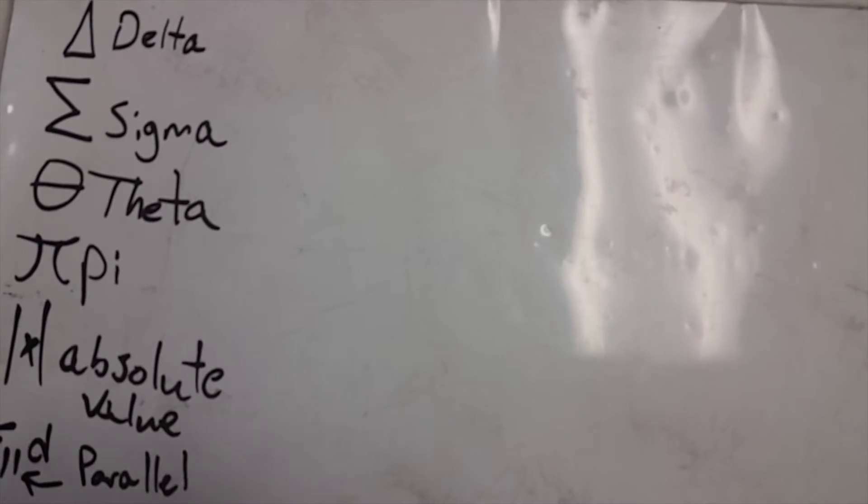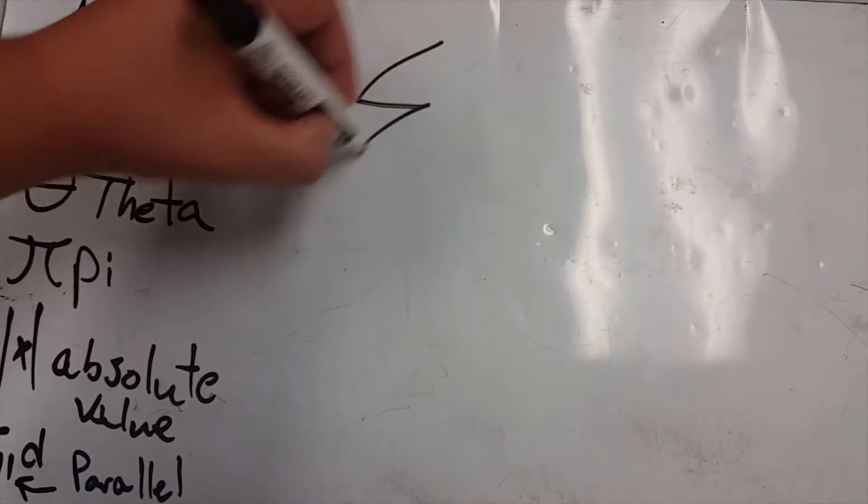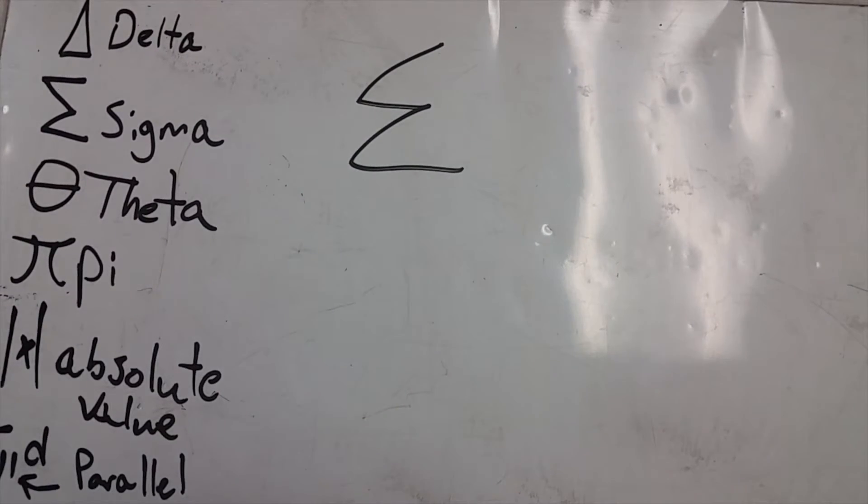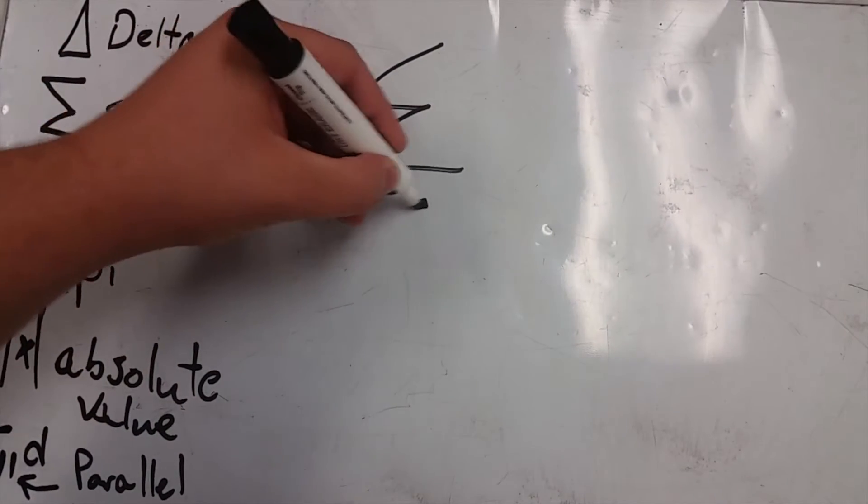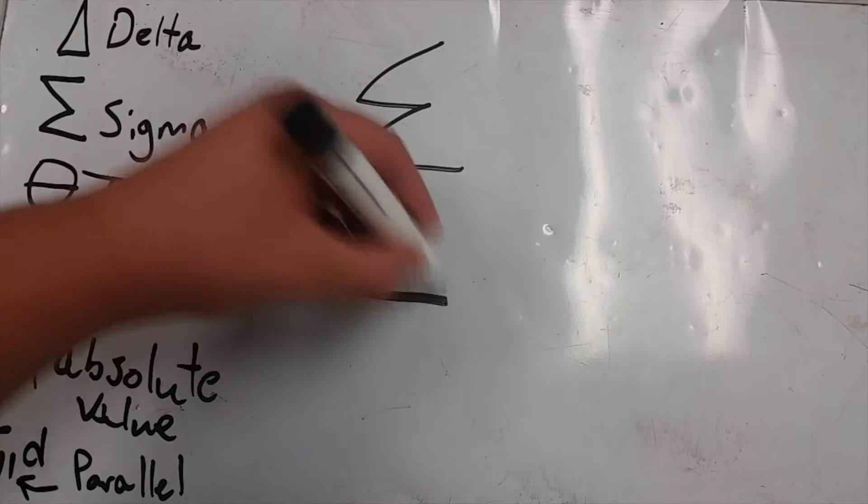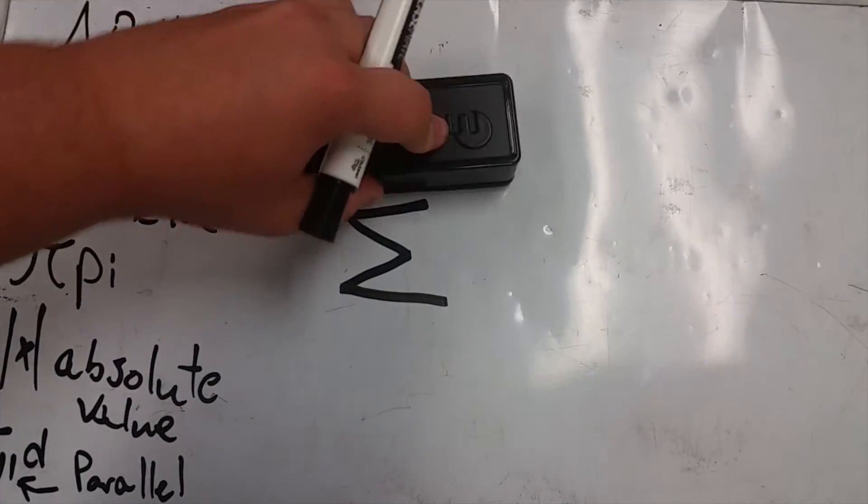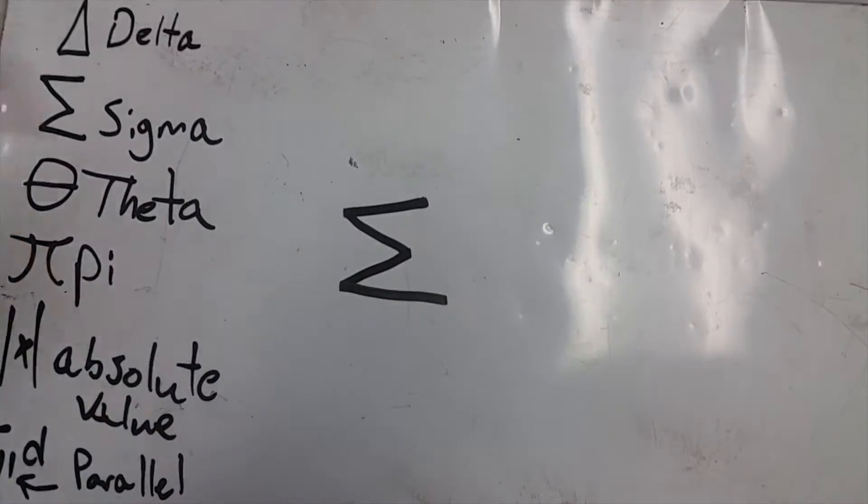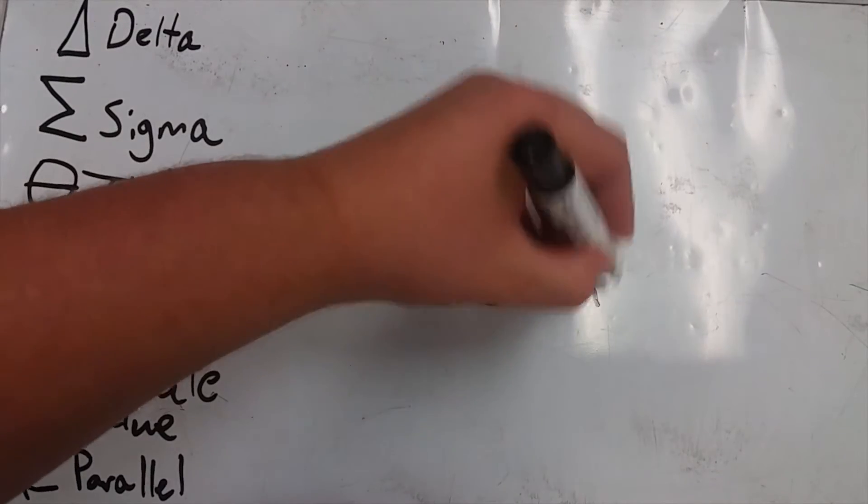The next word is Sigma. Looks like this, and when it's drawn properly, looks more like that. That's better - sideways M, kind of. That means a sum, sum of something.